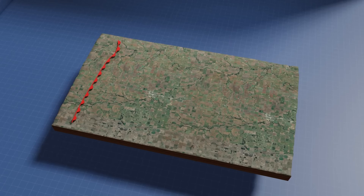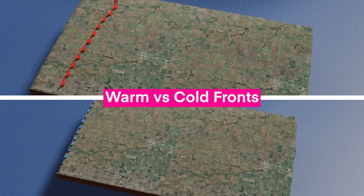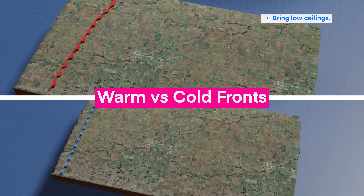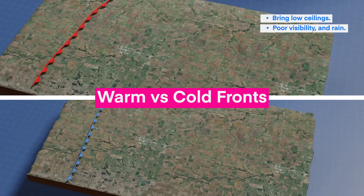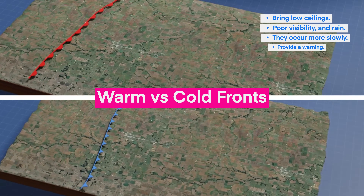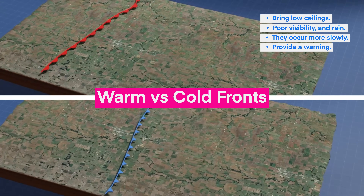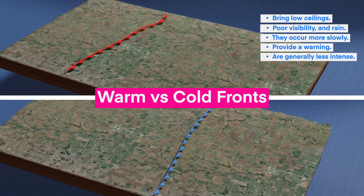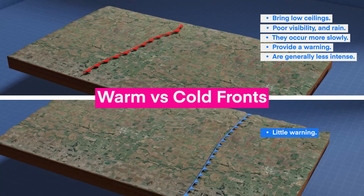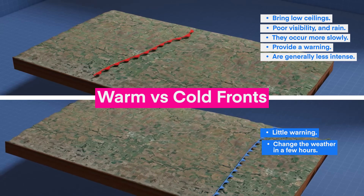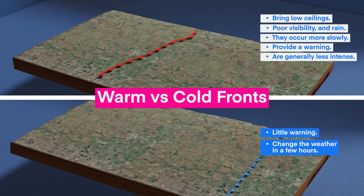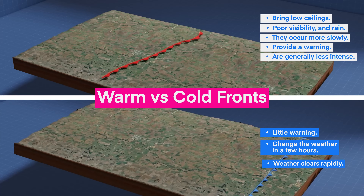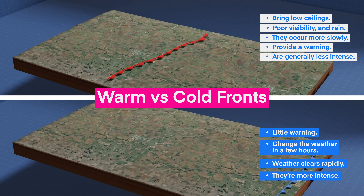Let's do a quick comparison of warm versus cold fronts. Warm fronts generally bring low ceilings, poor visibility, and some rain. They occur more slowly, provide warning of the incoming front, and are generally less intense than cold fronts. Cold fronts, on the other hand, approach with very little warning and can completely change the weather in a few hours. Weather clears rapidly after a cold front, and the weather that did occur is going to be more intense.